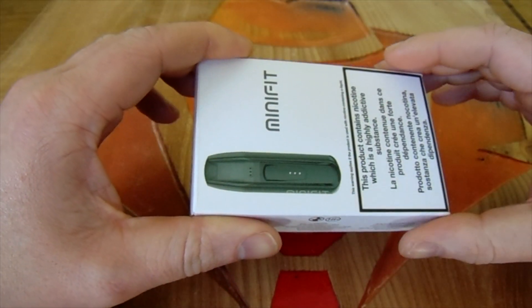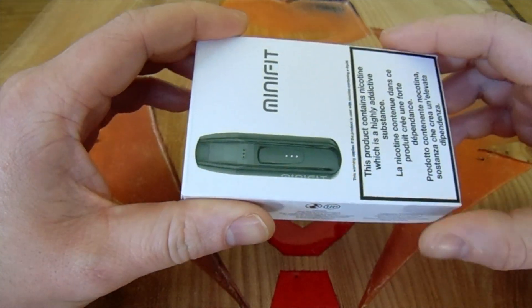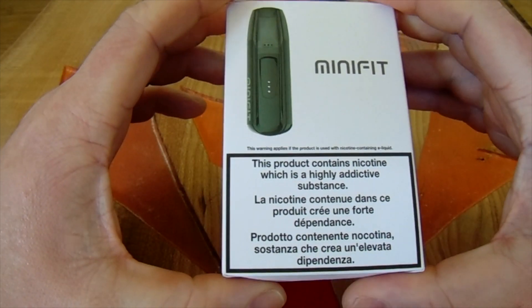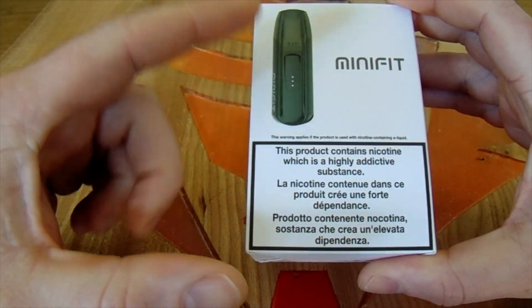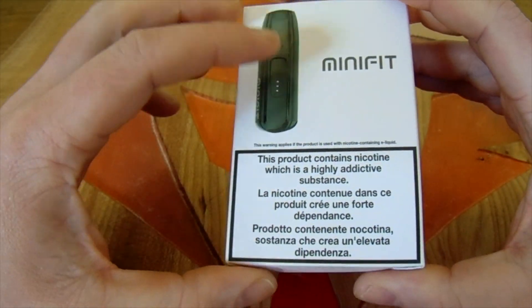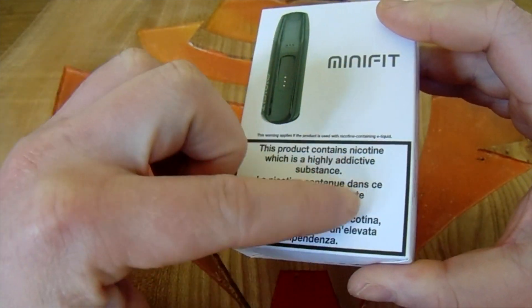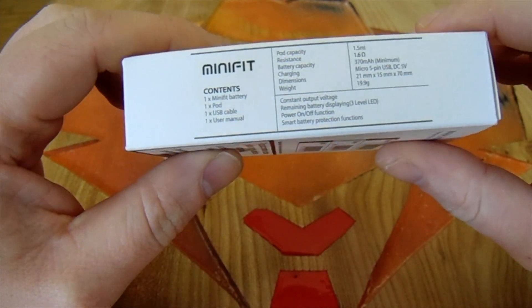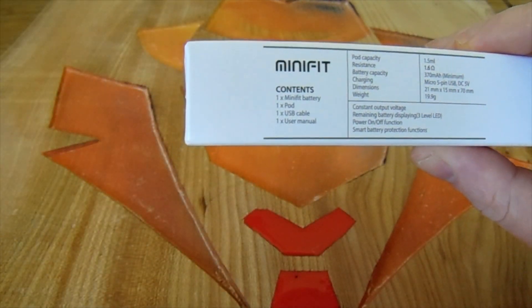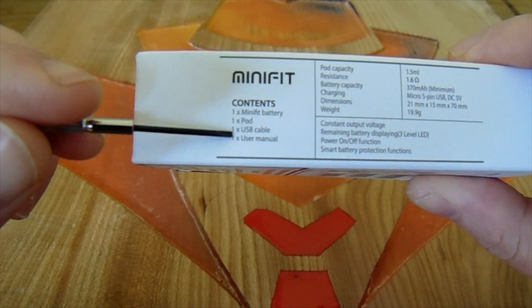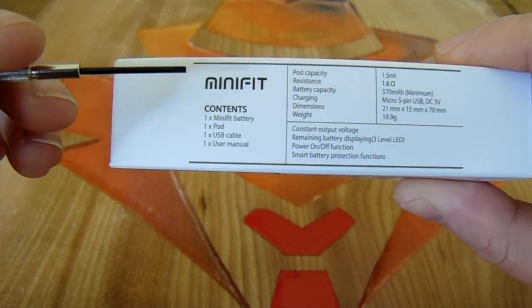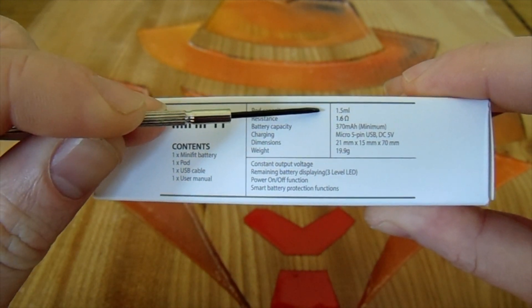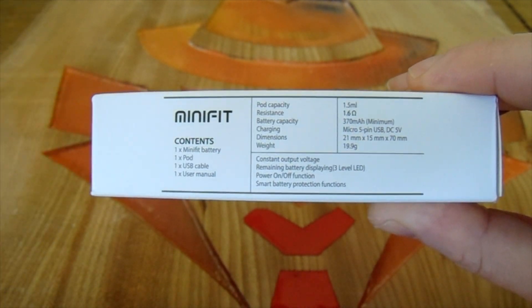So this is the box that it comes in. This is because it's in the UK. In America you probably won't be getting all this on here. On the side you've just got the contents of the pack along with some of the ratings like the pod capacity, the resistance, and everything else.